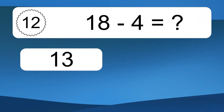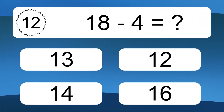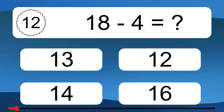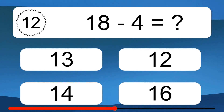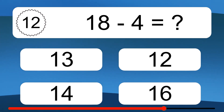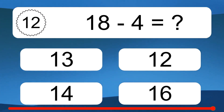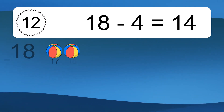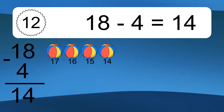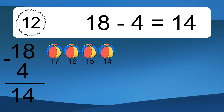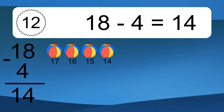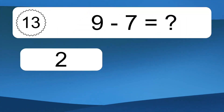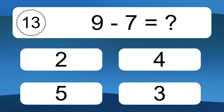18 minus 4 equals what? 18 minus 4 equals 14. Let's count it: 17, 16, 15, 14. 9 minus 7 equals what?